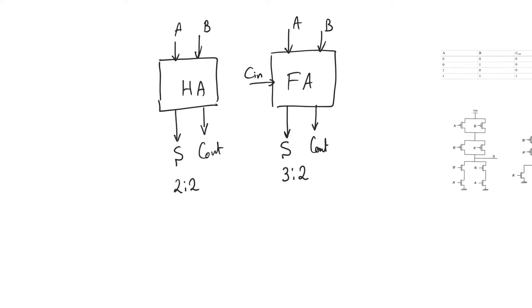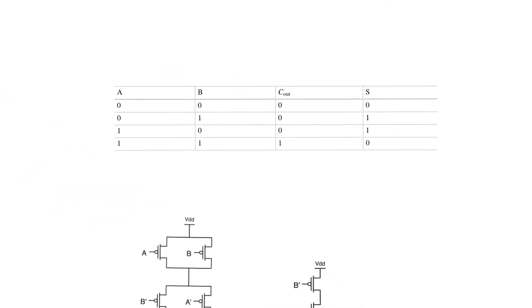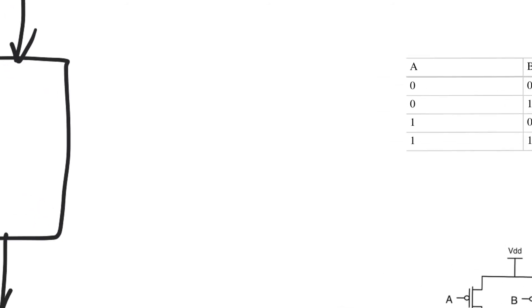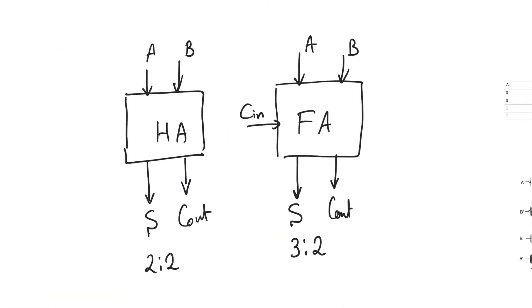Now let's look at the truth table for the half adder. It has two inputs A and B, and two outputs Cout and S. There's a little trick here because this is actually not a single truth table — there are two independent truth tables for two independent two-input functions, Cout and S. So we are looking at two gates, Cout and S, each of which is independent from the other. Each of these blocks will consist of two gates within, one for the sum and one for the carry out.